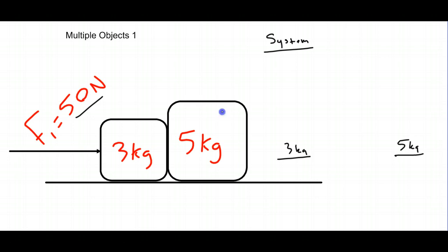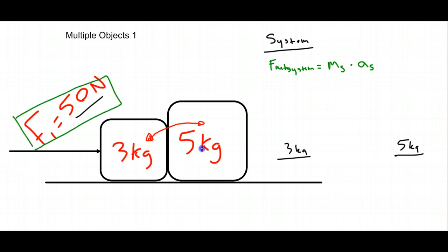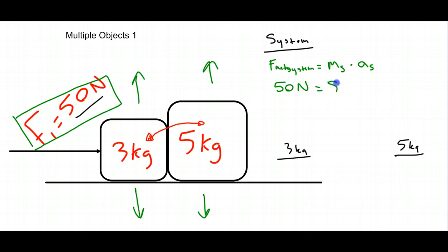In this case, if we want to know the acceleration of each object, the acceleration of one object is the same as the other, which is the acceleration of the entire system. The net force on the system equals the mass of the system times the acceleration of the system. The 50 newton force is the only force causing acceleration — the normal forces and gravitational forces cancel each other out. So our net force is 50 newtons accelerating 8 kilograms of mass.